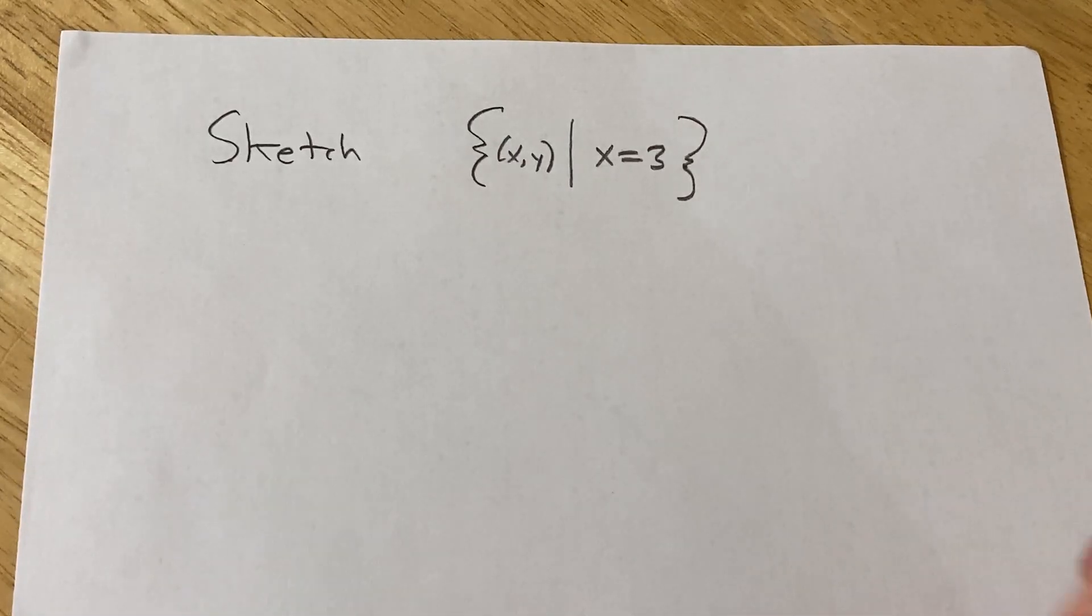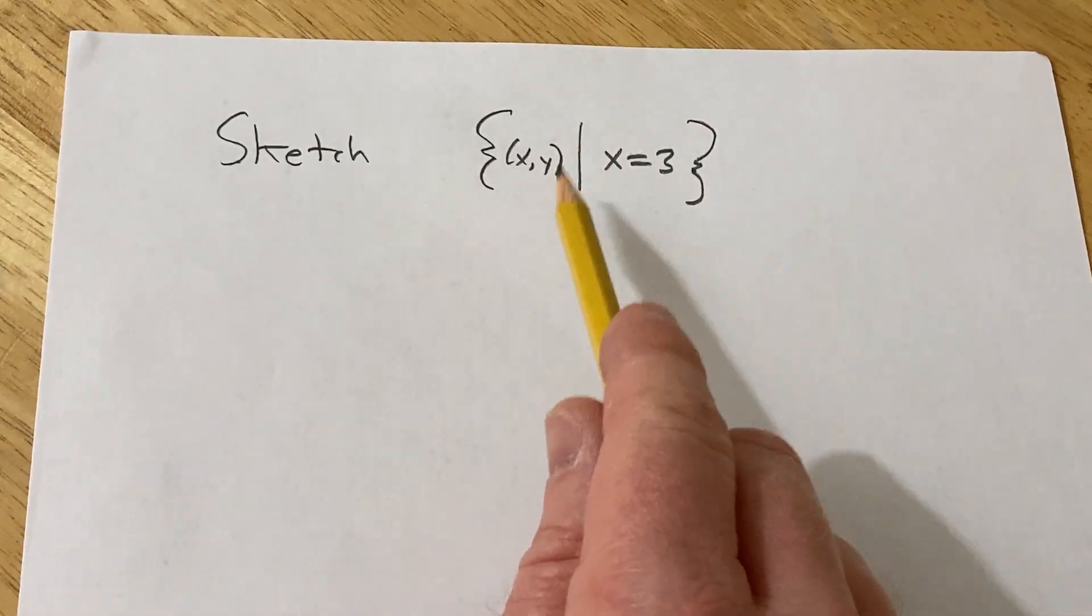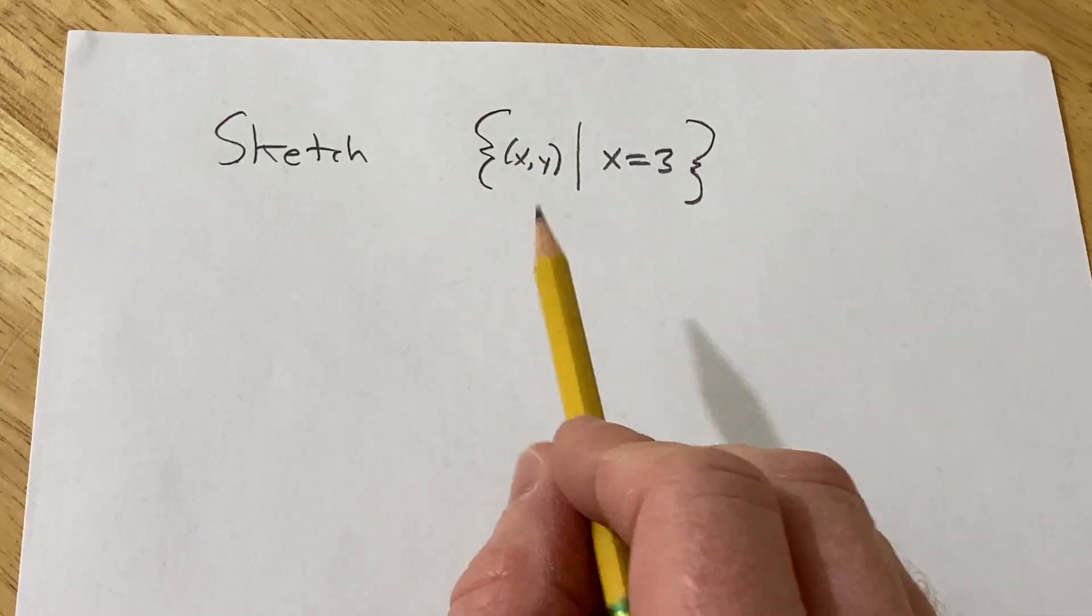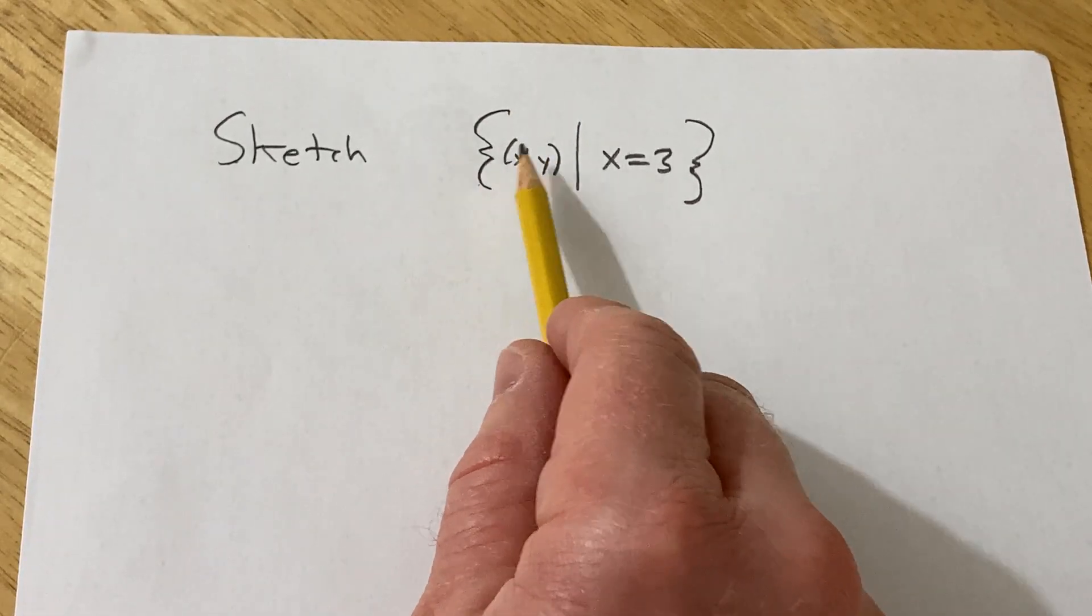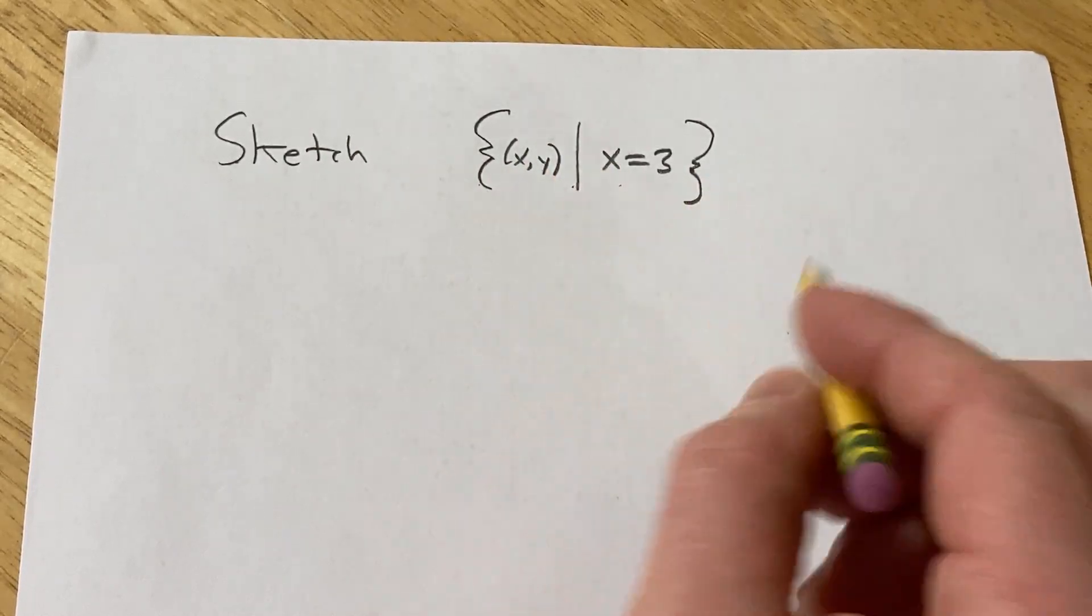Hello, in this video we're going to sketch the region described by this set. This is the set of all ordered pairs of the form x comma y such that x is equal to 3.